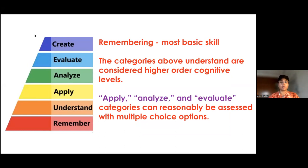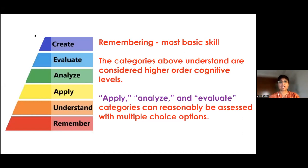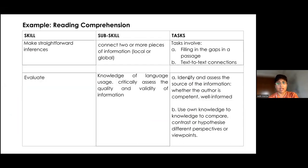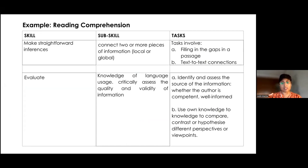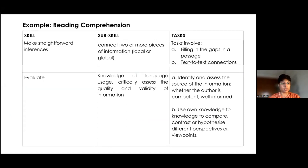The skill to create, or certain parts of analysis, can only be assessed through more formative questions. But apply, analyze, and evaluate — categories above remembering and understanding — can be reasonably assessed through multiple choice questions. A Bloom's-based tagging table helps us know exactly what sub-skill we're asking about and what kinds of tasks can create those questions. Building a master table like this for the whole academic year could help you create really good, high-quality questions for reading comprehension tasks in English.